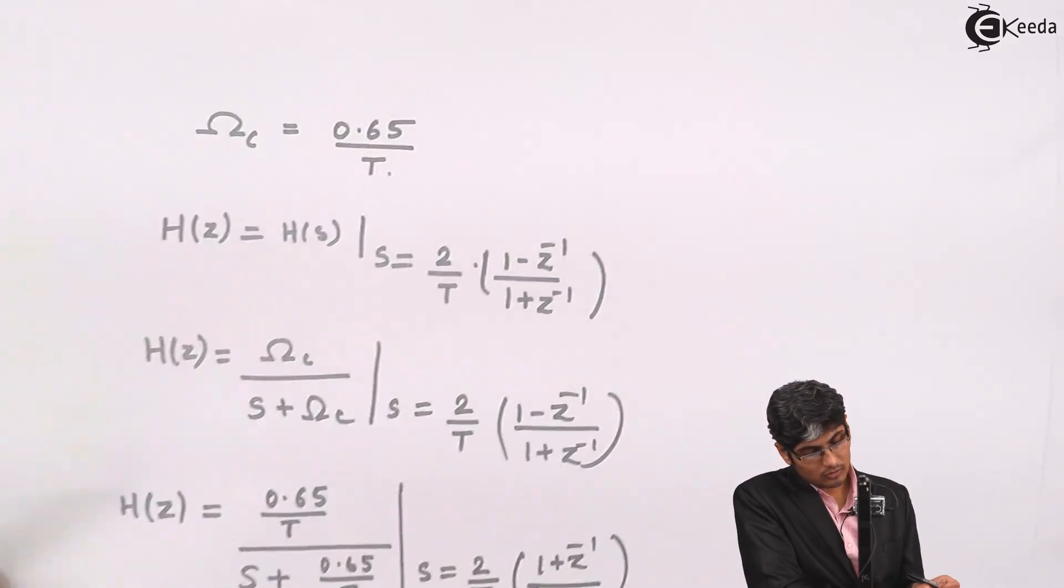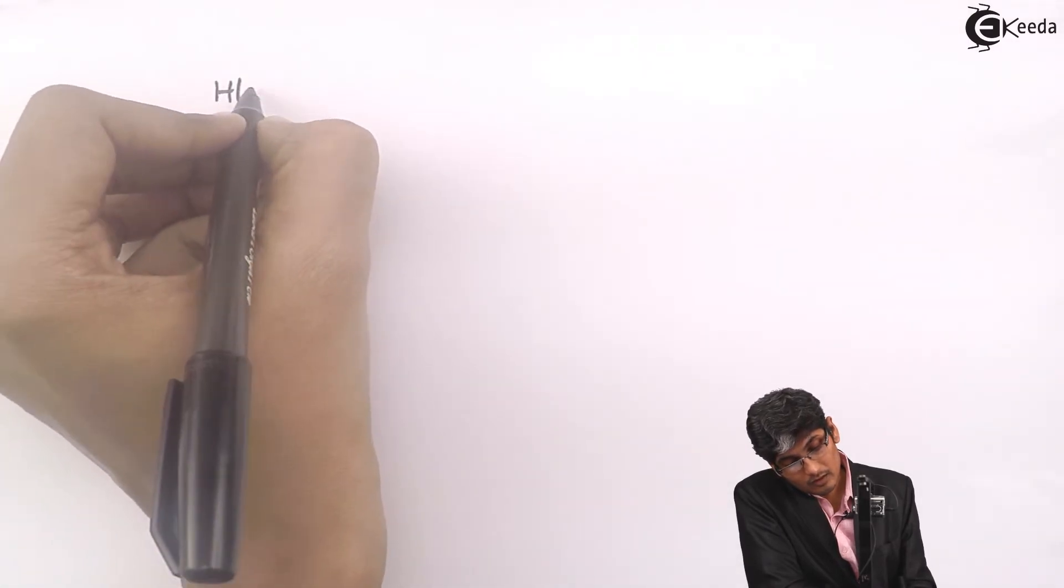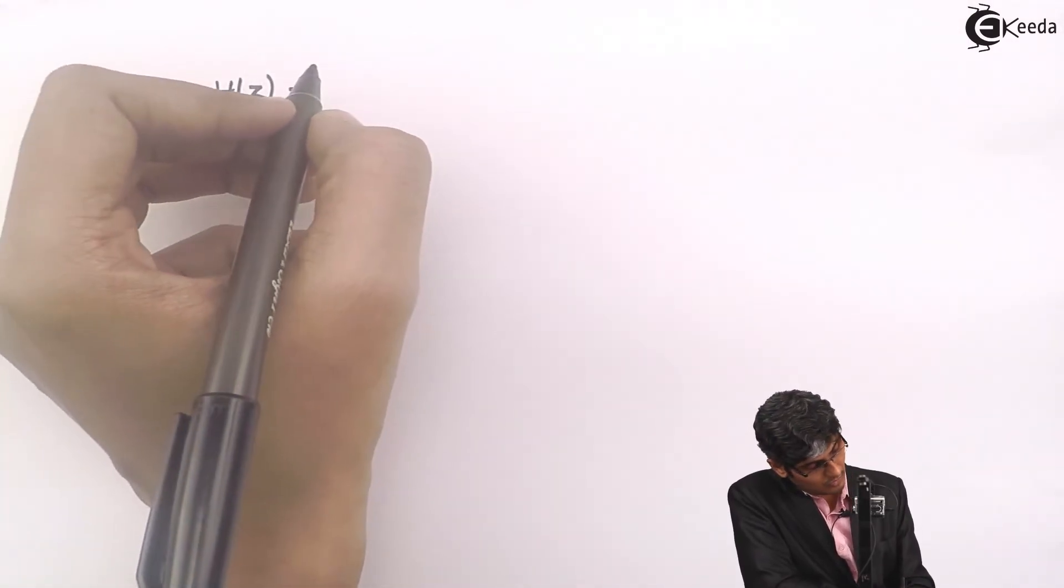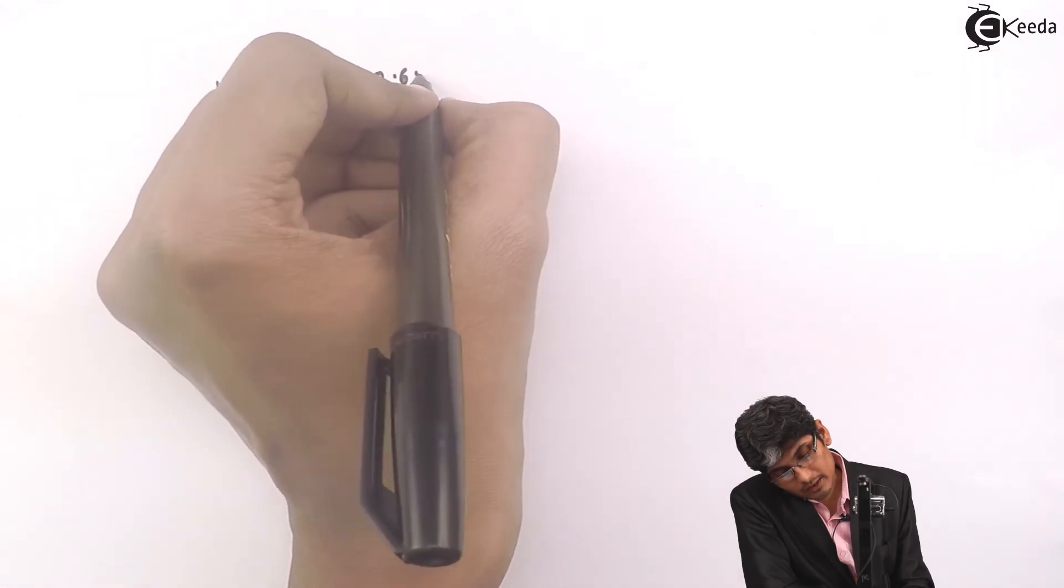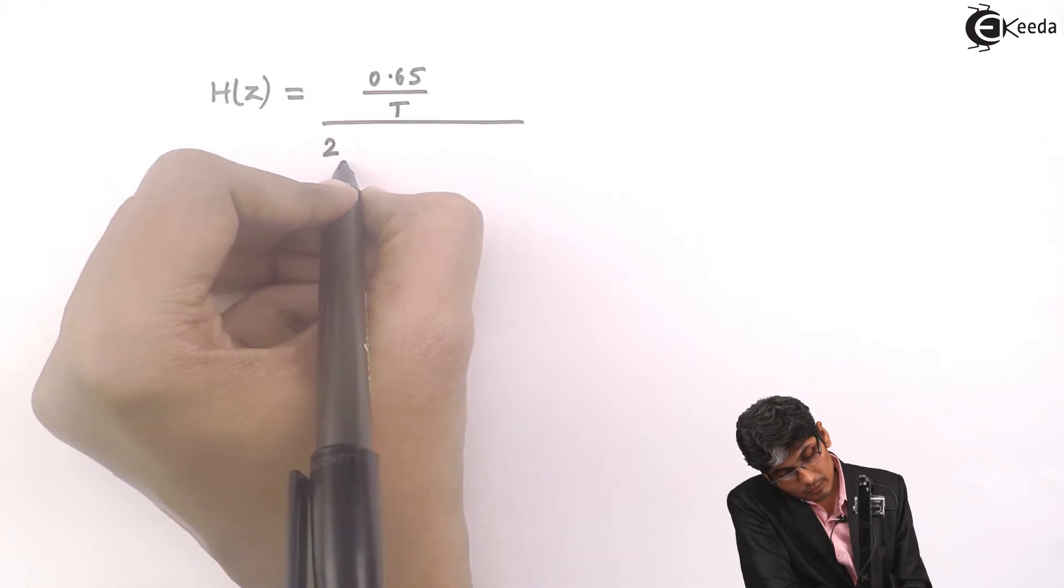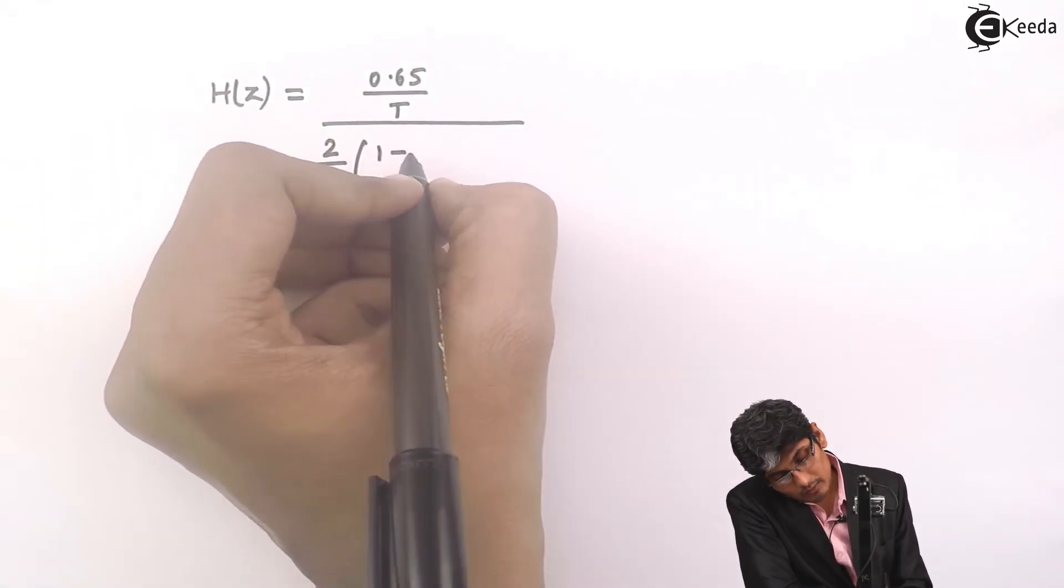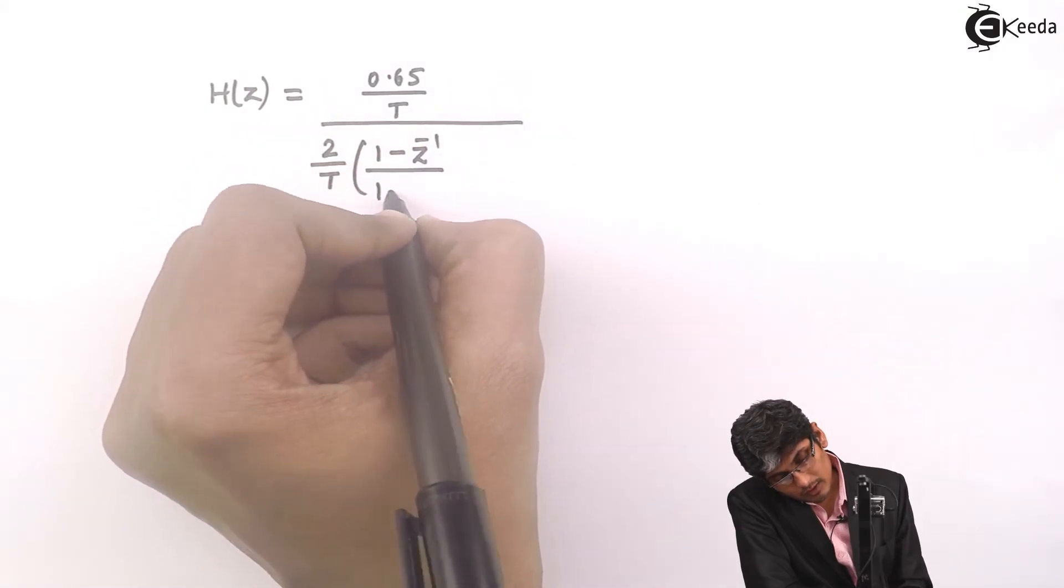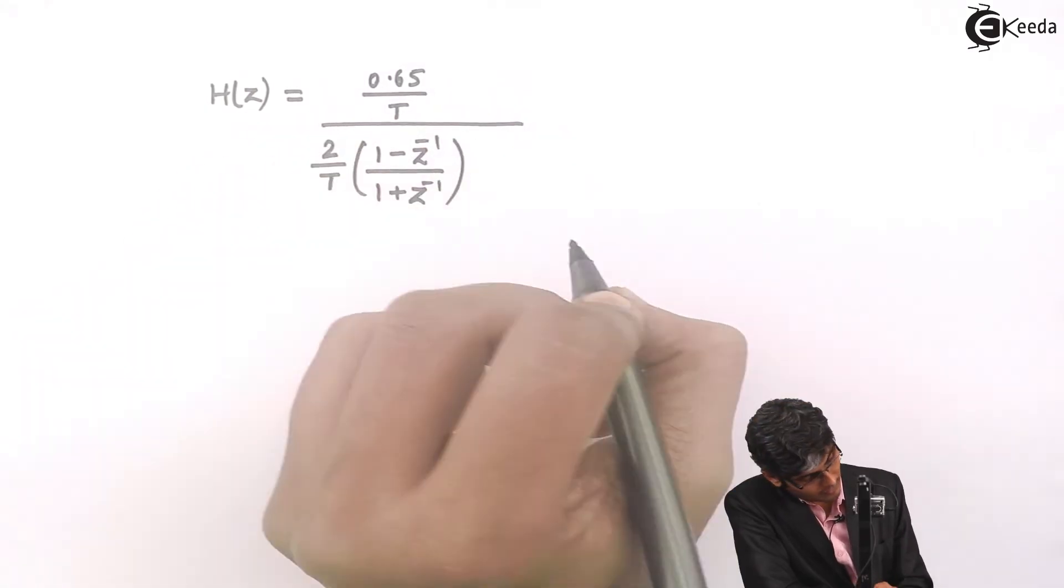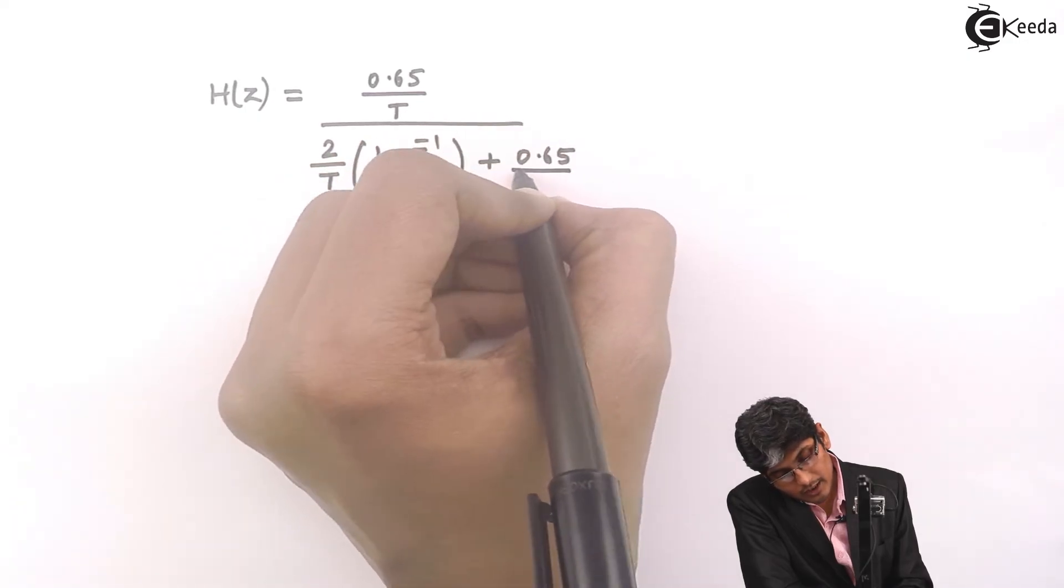Let us substitute the value for s now. So we get (0.65/T) divided by [(2/T)(1 - z⁻¹)/(1 + z⁻¹) + 0.65/T].